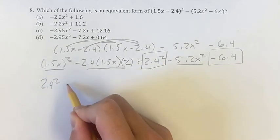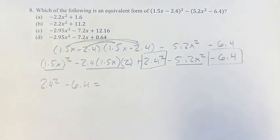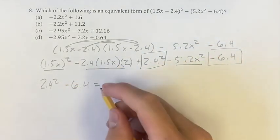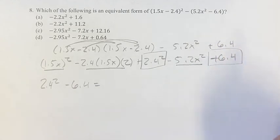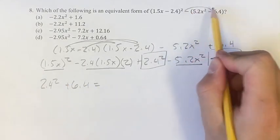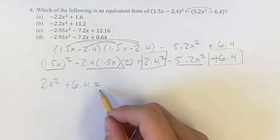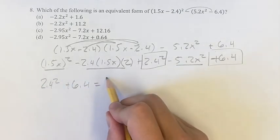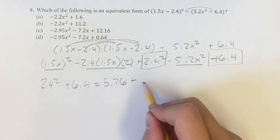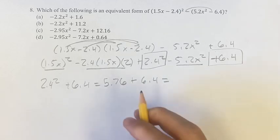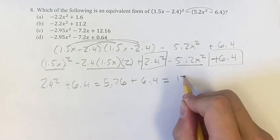2.4 squared minus 6.4 is equal to, sorry, this is plus 6.4 because we had to distribute the negative. 2.4 squared, 5.76 plus 6.4, 5.76 plus 6.4 is going to be 12.16.